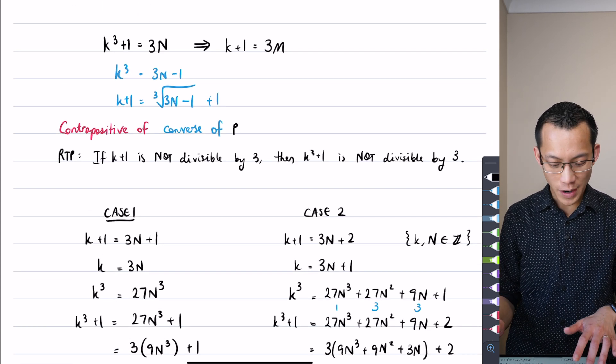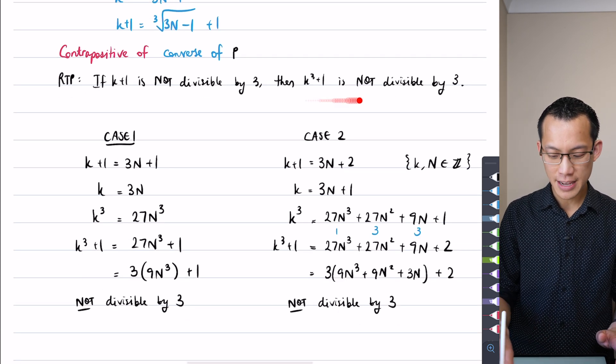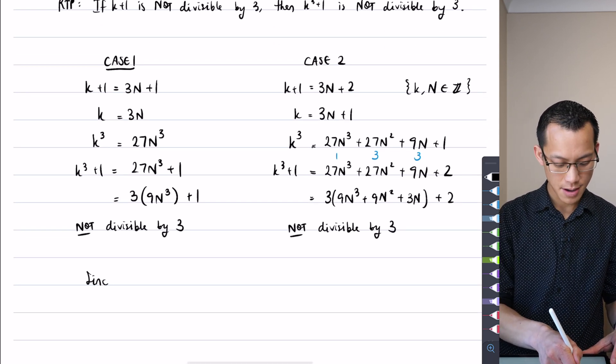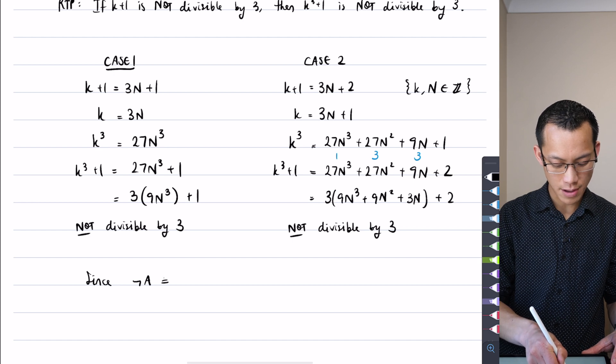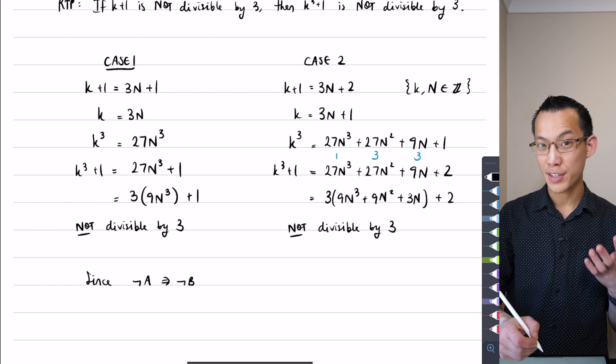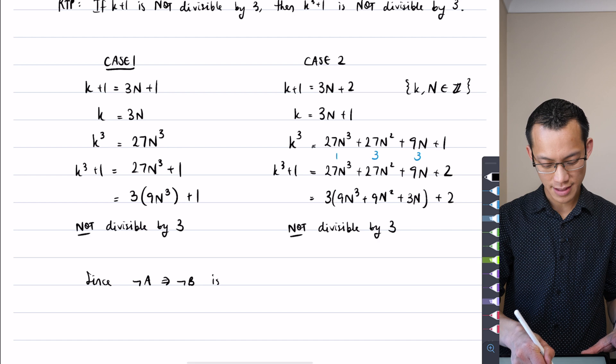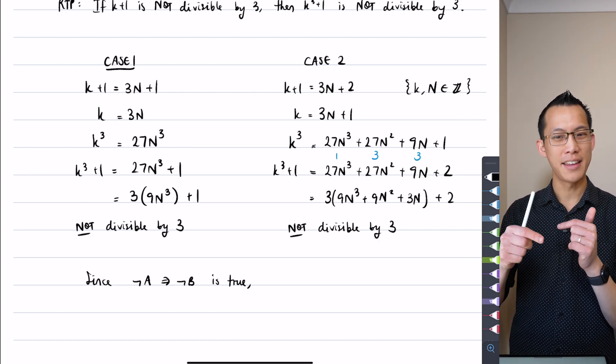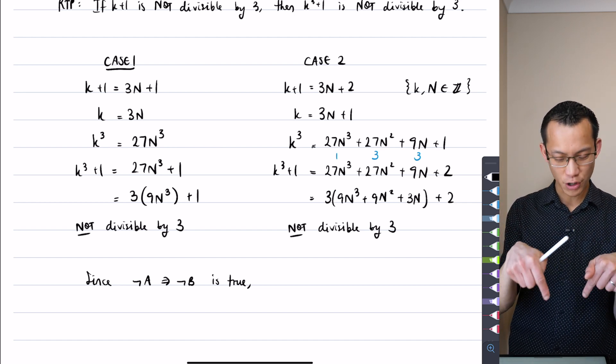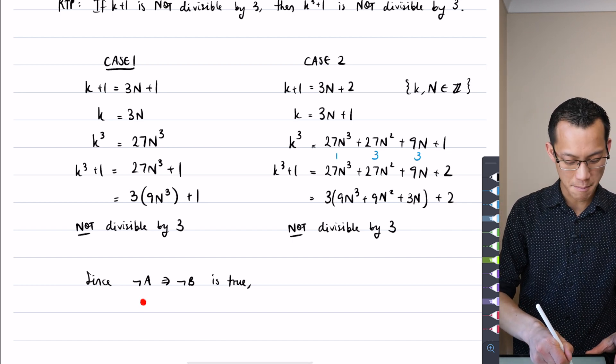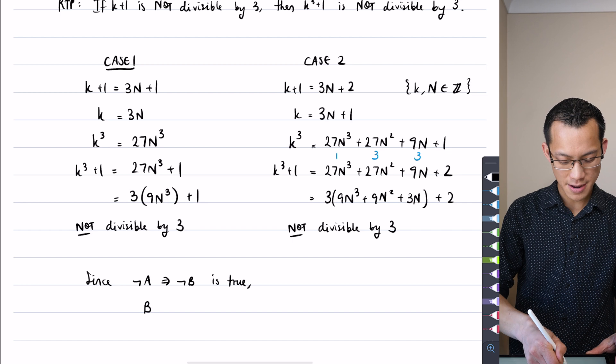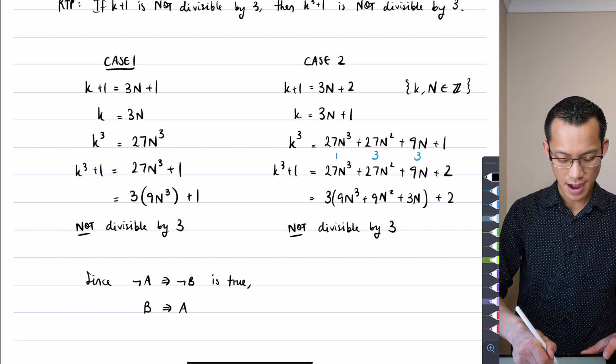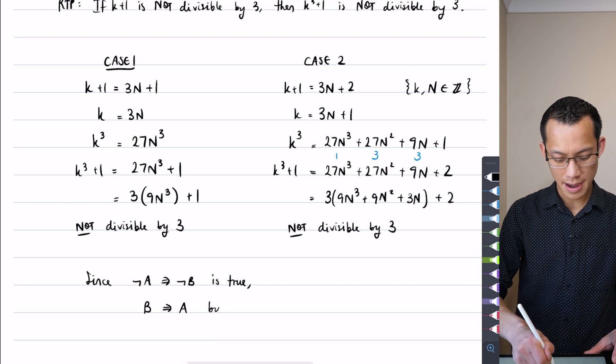Okay, so what I've proven is this statement here, right? And this is the contrapositive, so I can say since the not A implies not B statement, I just proved that that's true, like so. Since that's true, I can say by the contrapositive that the contrapositive is true, right? And that's B, oopsie daisy, B implies A, in other words, that's the converse I was after. B implies A by the contrapositive.